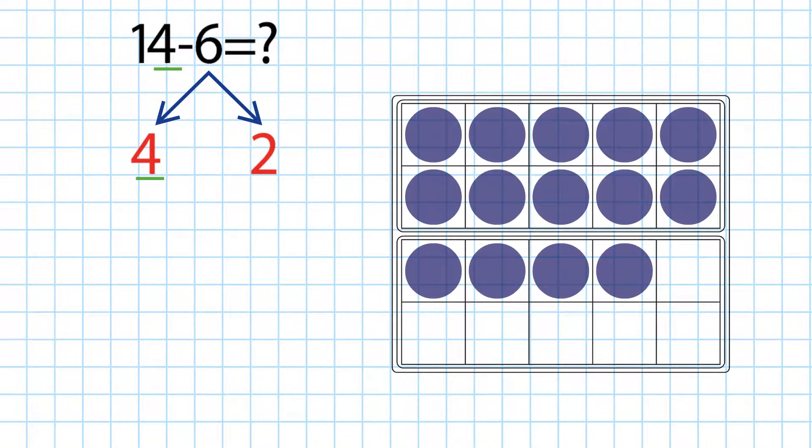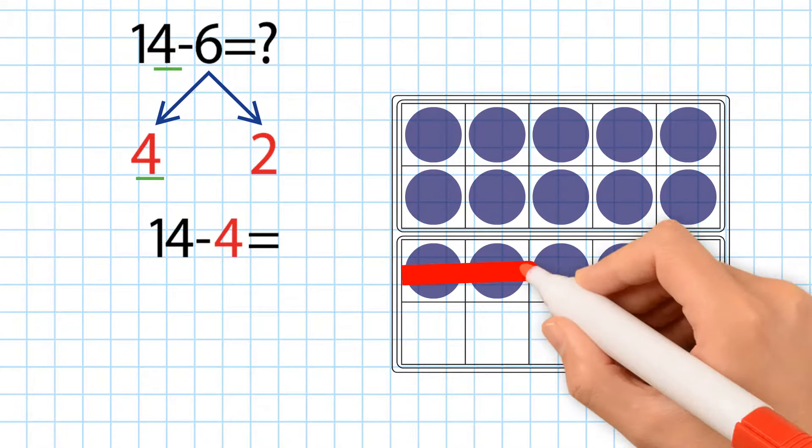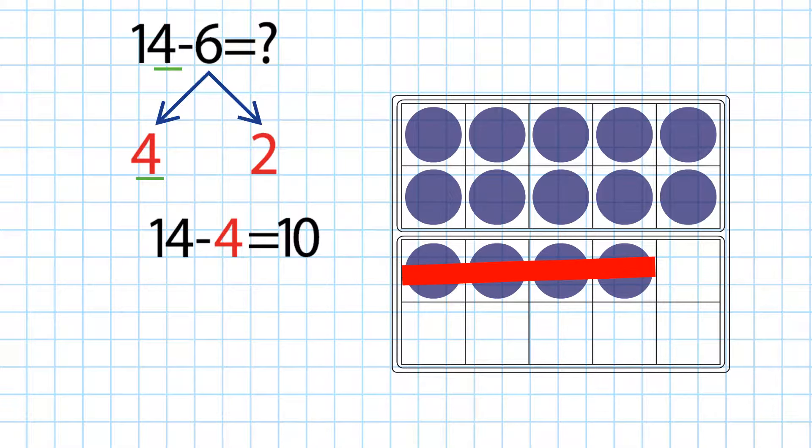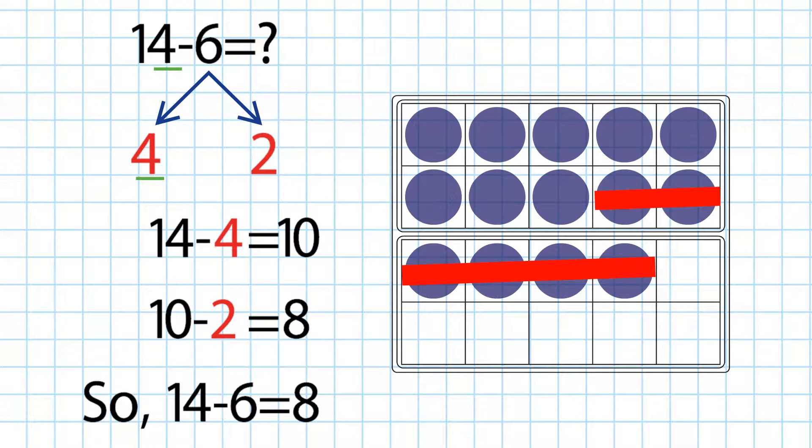Let's draw 14. Next, we subtract 4 from 14 to make a 10. After that, we subtract 2 from 10 to make 8. 14 minus 6 is equal to 8.